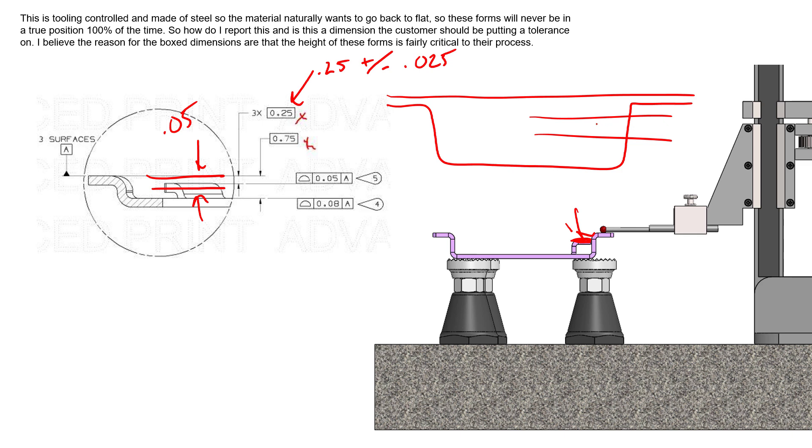That means we are controlling both the form of that surface because all the elements need to be inside there. We're controlling the orientation of that surface because all of the elements need to be inside there, and we're also controlling clearly the location of that surface vertically up and down as well. That's why profile of the surface is such a powerful control.